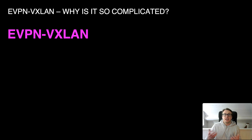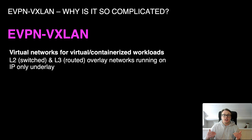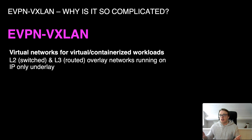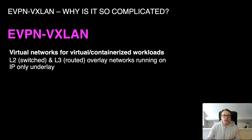What does this technology stack actually give us — what problems does it solve? It builds virtual networks for virtual or containerized workloads. It can give us layer 2 switched or layer 3 routed overlay networks running on an IP-only underlay. We have our relatively statically configured underlay as our foundation, and then we build networks on top. In modern data centers where VMs and containers are spun up and down, we can't wait a month to configure a VLAN — overlays solve that. A key point is that this runs on IP-only; it's essentially UDP.